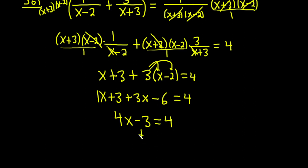And we can add 3 to both sides. So plus 3 plus 3. We end up with 4x equal to 7. And then because the x is being multiplied by 4, we can divide by 4. And so we get x equals 7 over 4 as our final answer.